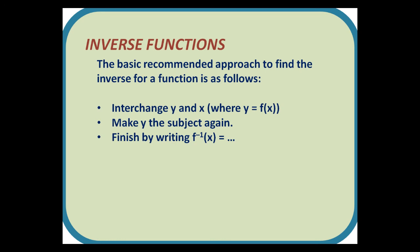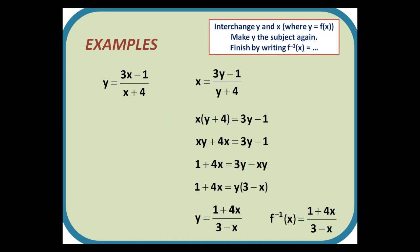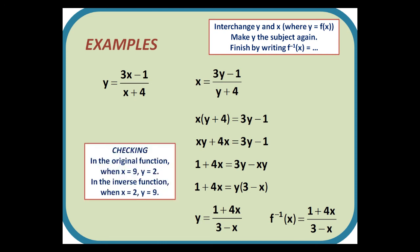The basic recommended approach to find the inverse of a function is: firstly interchange the y's and x's, then make y the subject again, and finish off by writing f⁻¹(x) =. In our first example we have y = (3x − 1)/(x + 4). Interchanging x's and y's gives x = (3y − 1)/(y + 4). We multiply both sides by (y + 4), multiply out the brackets, and get all the y's on the same side. So 1 + 4x = 3y − xy. We factorise the y out and divide by (3 − x), giving f⁻¹(x) = (1 + 4x)/(3 − x). We can check: substituting x = 9 into the original gives 26/13 = 2, and substituting x = 2 into the inverse gives y = 9, which confirms we are correct.